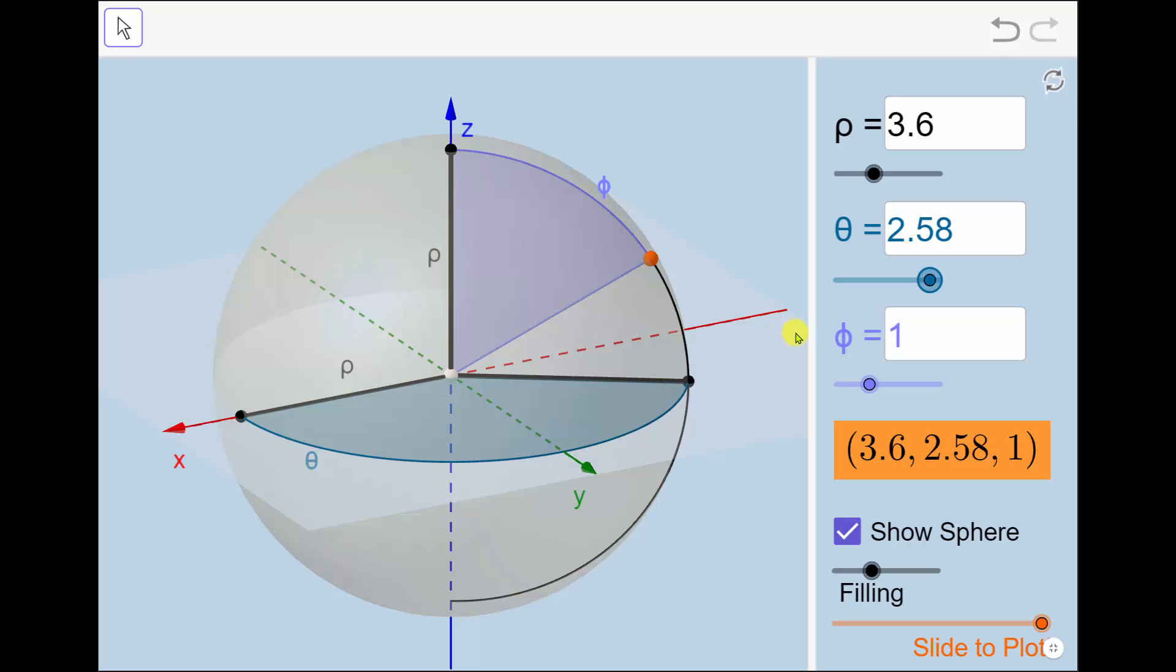And finally, phi is the angle between the positive z-axis and the point, which we see here. As we change phi, it changes the location of the point.